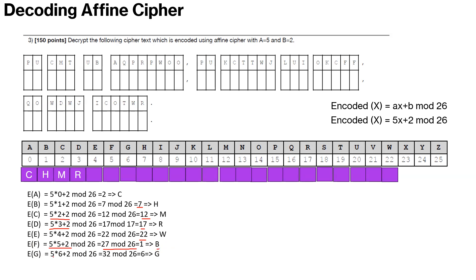Now F becomes 5 times 5 plus 2 which is 27. 27 mod 26 is 1 which is B. And then again it will keep going in multiples or additions of 5 from 1. So G is 5 times 6 plus 2 which is 32. 32 mod 26 is 6. So that's how you keep going.